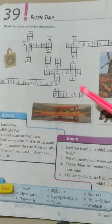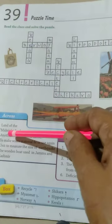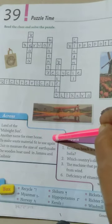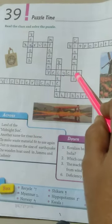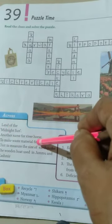Okay. Sixth question, deficiency of vitamin D causes which disease? Rickets. Okay. Seventh one, to make waste material fit to use again. The seventh one, Recycle.